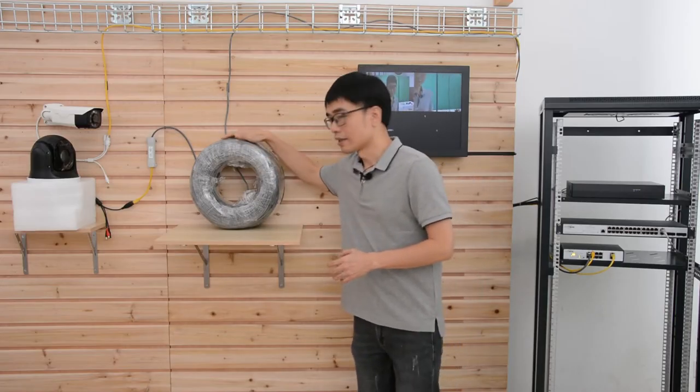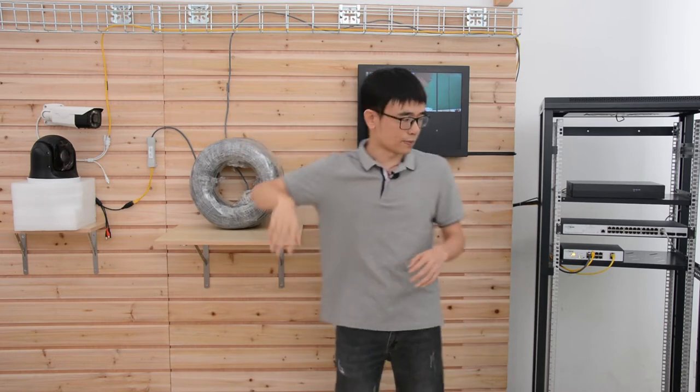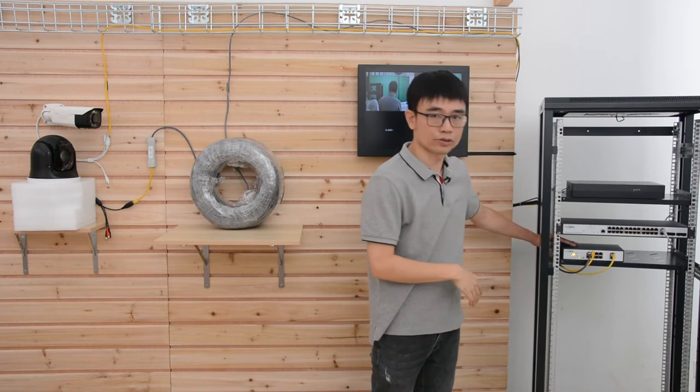This is the system setup. Here we got a 1000 foot continuous run Cat5 Ethernet cable. One end is connecting to this long range PoE switch. It looks no different from a regular switch. Only the first four ports support long range PoE.